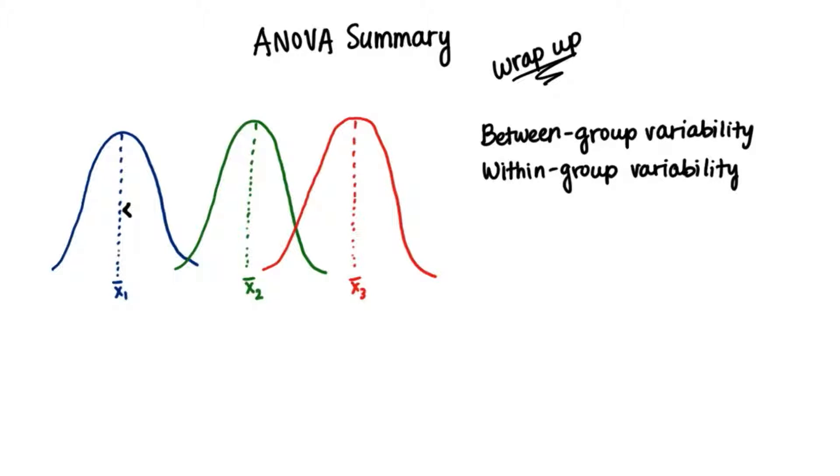Between-group variability is a measure of how spaced apart these sample means are from each other. We do that by finding the grand mean and each square deviation from the grand mean for each sample mean. We multiply each sample size by the square deviation of each sample mean from the grand mean. Then we add them up.